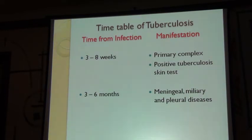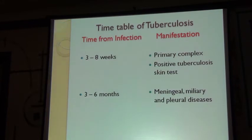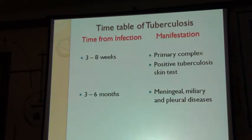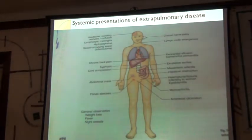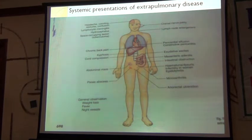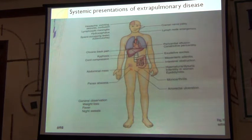This case is presented for two or three reasons. One: the timetable of tuberculosis — three to six months from primary infection you get meningeal and miliary disease; up to three years, gastrointestinal and bone disease; three years onwards, reactivation and fibrosis. This timetable was applicable in this lady — she developed meningeal and miliary disease at three to six months. The second reason is the systemic presentations of extra-pulmonary tuberculosis, where mycobacterium tuberculosis can affect many parts of the body.